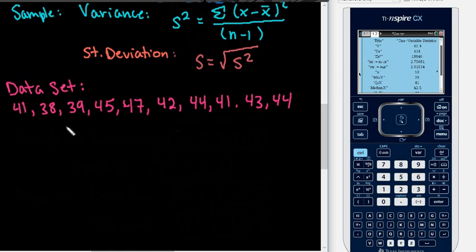If you're looking for the population standard deviation, we would look for sigma. And in our calculator, it's sigma X. So the 2.61534 is our population standard deviation.